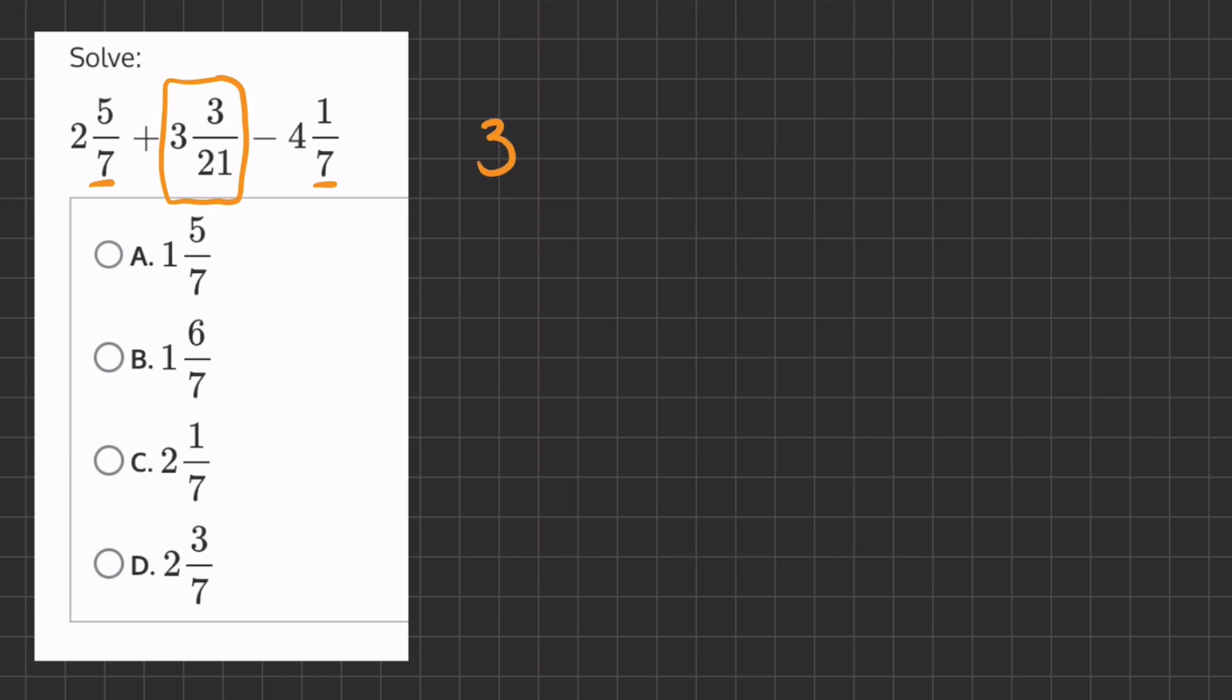So let's take this 3 and 3 over 21, and if we divide the numerator and denominator by 3, we will get our fraction to be 3 and 1 over 7.